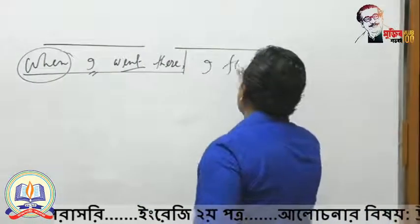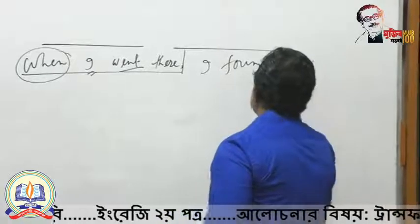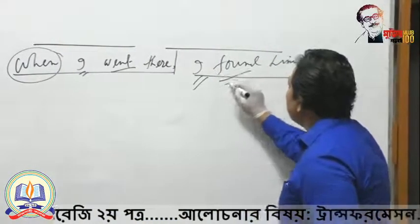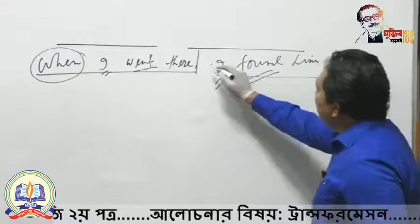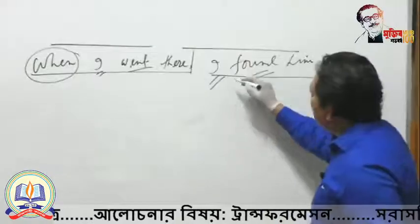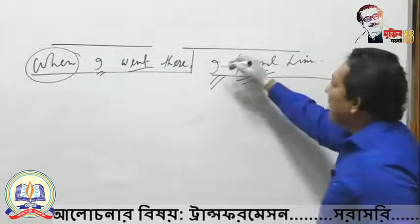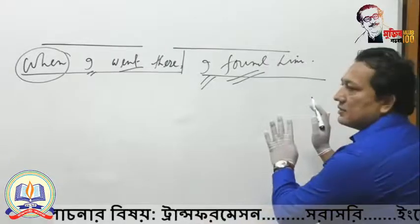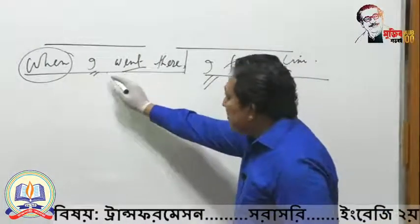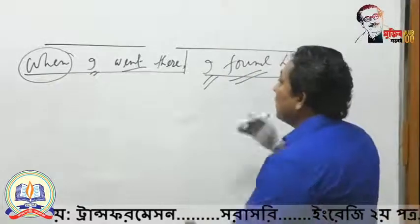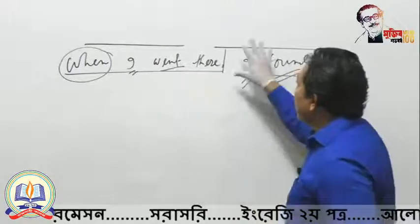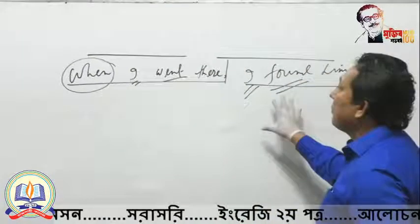'When I went there, I found him.' Here, 'I found him' has a subject and a finite verb and ensures completeness and independence. 'When I went there' depends on this main part. So you are getting one independent part and one dependent part, and in this way you are making a complex sentence.